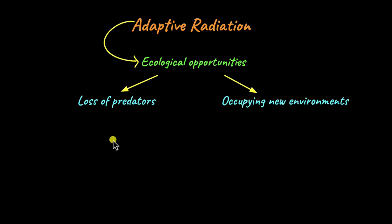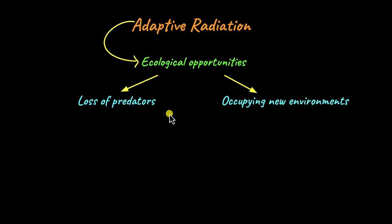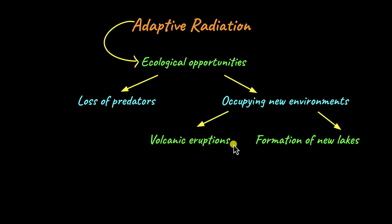When these finches flew from one island to another, the new island they occupied had entirely different conditions compared to their previous home. This new island may also not have had any predators that they usually faced in their old habitat. This would lead to a specific set of characters being selected, leading to adaptation to the new environment.